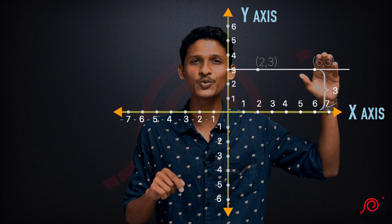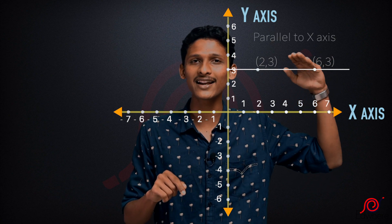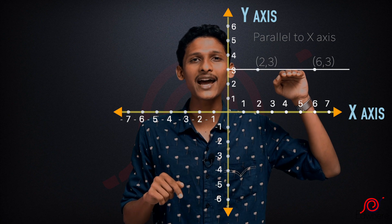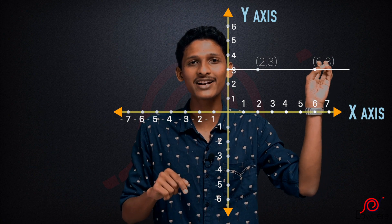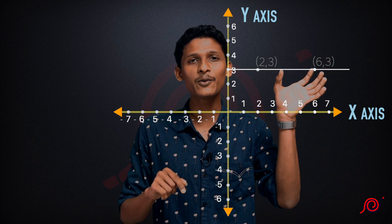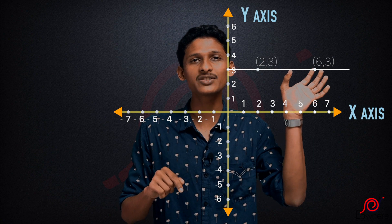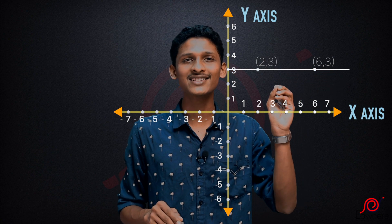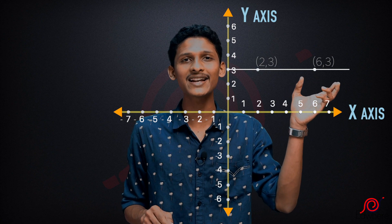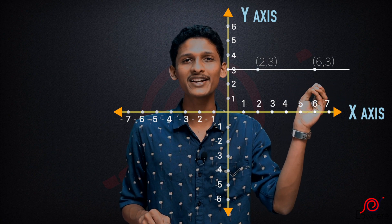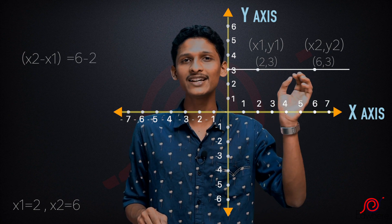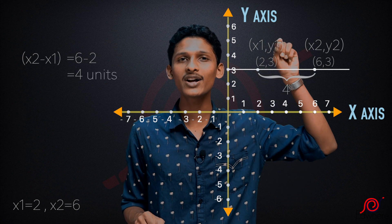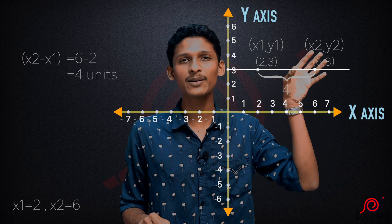Using the point (2,3), we will show the distance between these two points. The points are (2,3) and (6,3), both on the same horizontal line. The distance between these two points is four units.